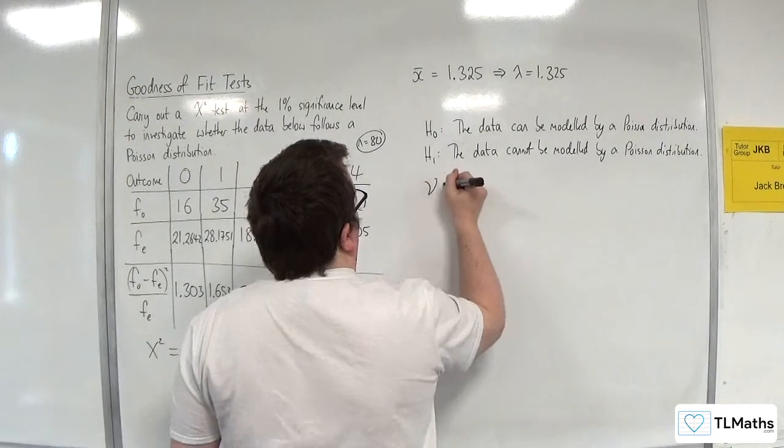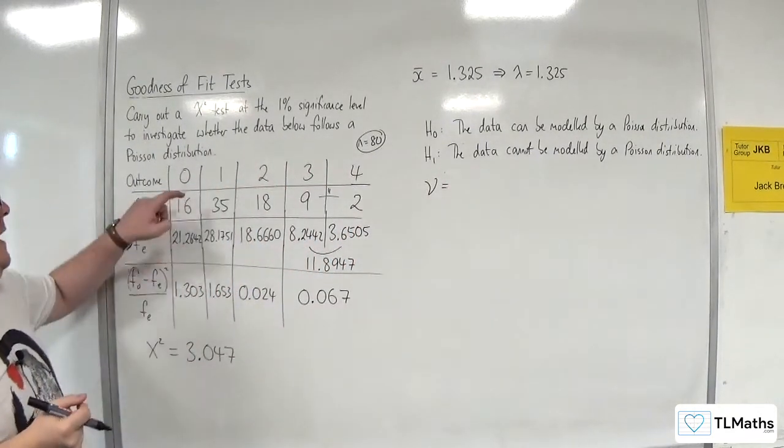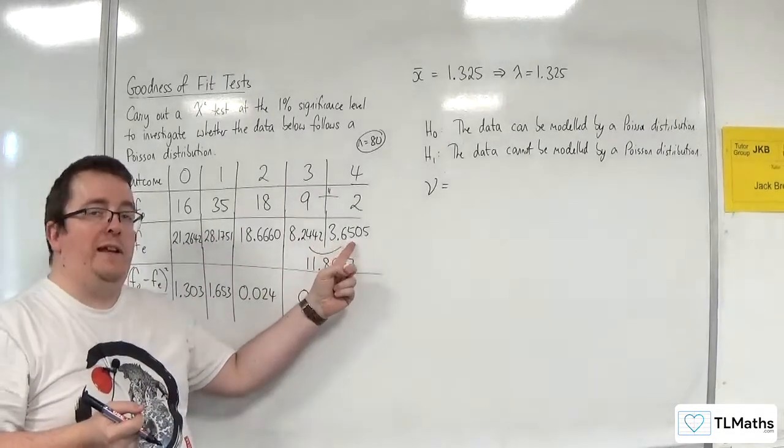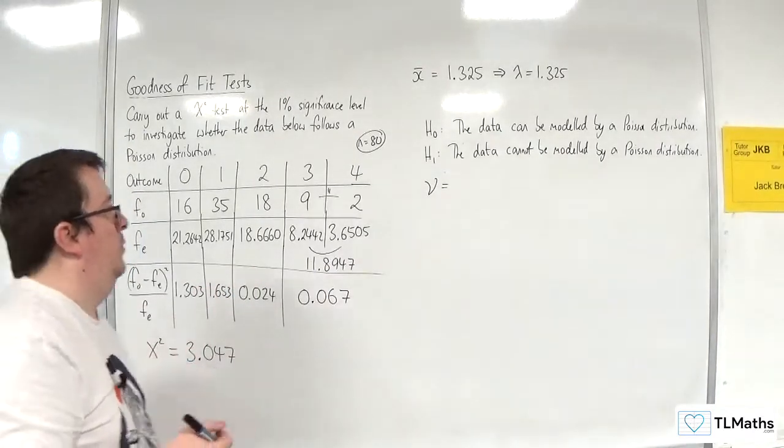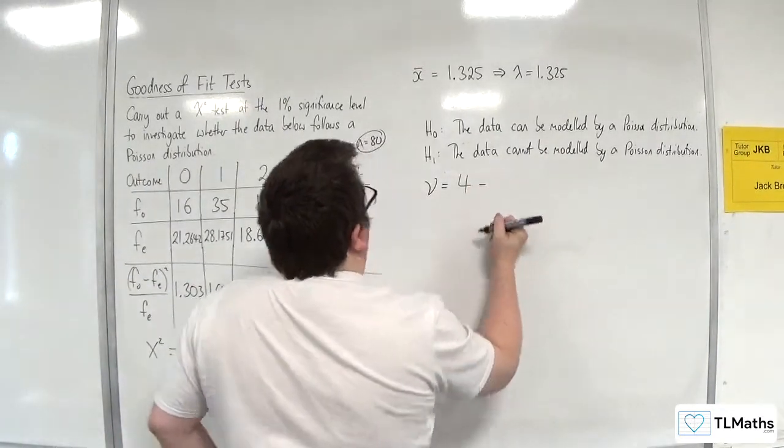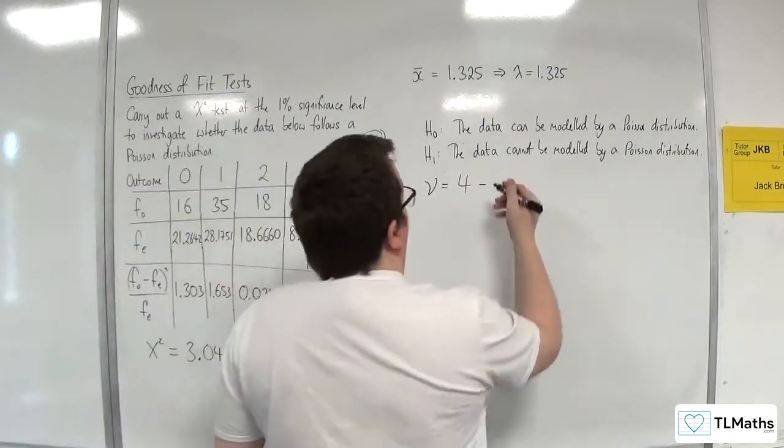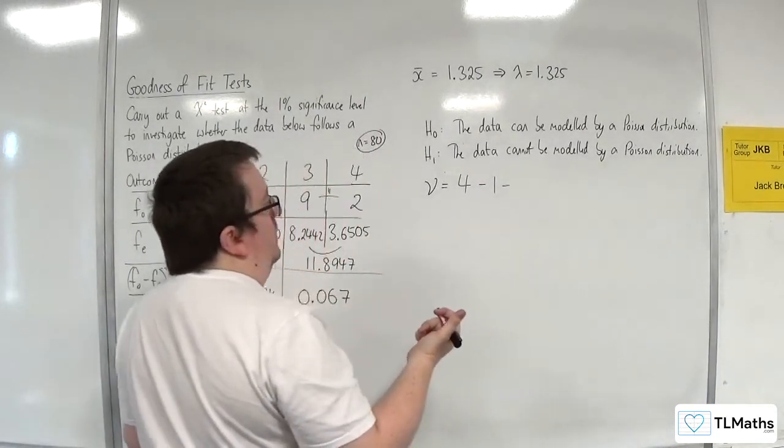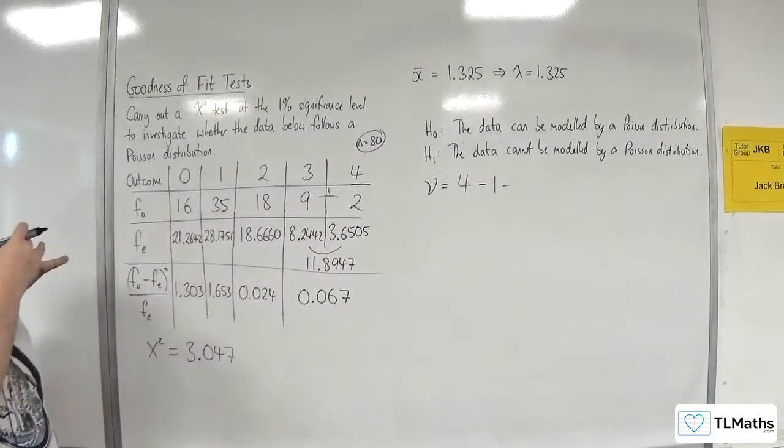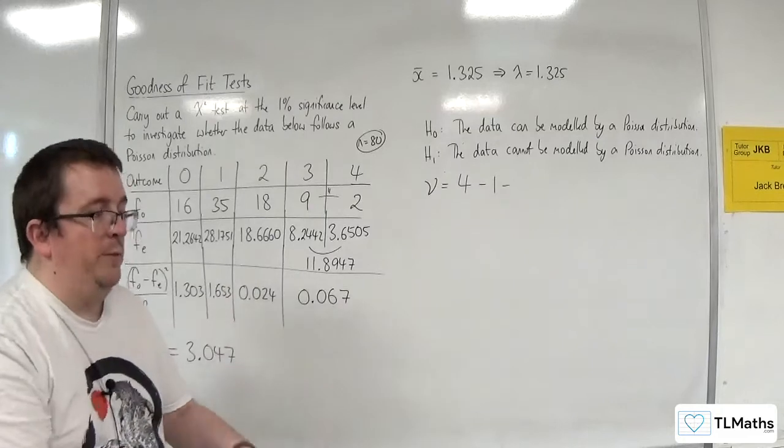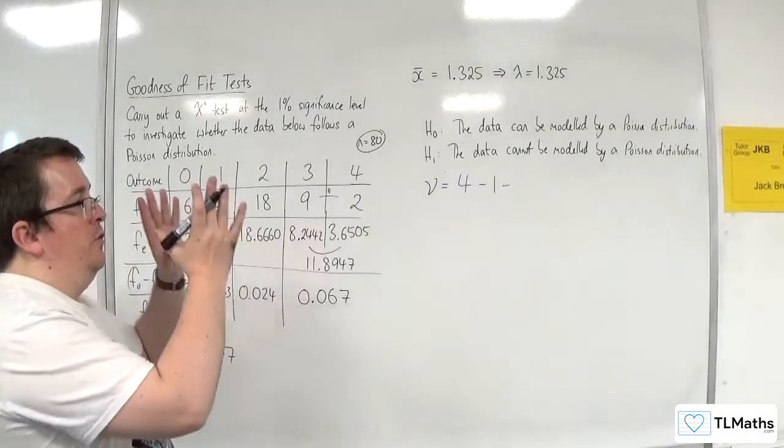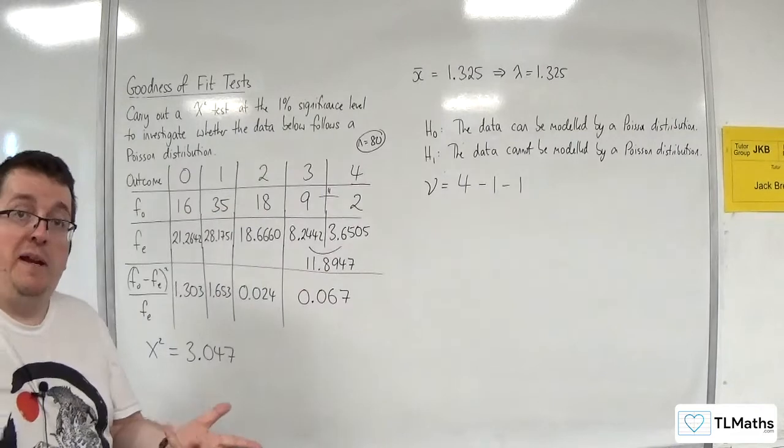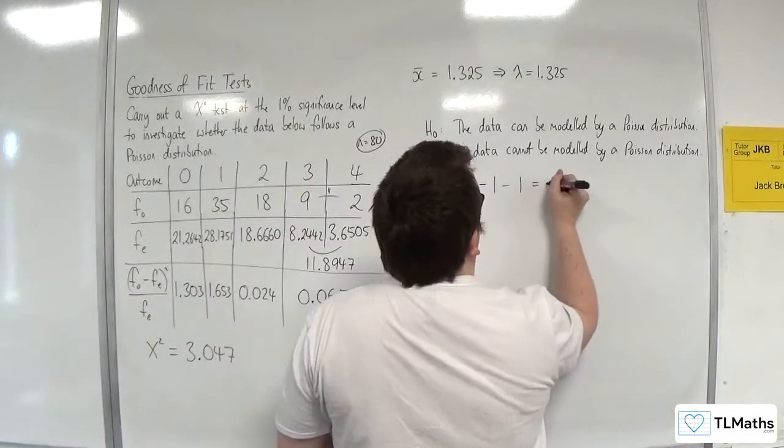So the degrees of freedom. We had originally five columns, but because we had the expected frequency less than five, we had to reduce that down to four. So we then had four columns. We've got to take away one for the estimated parameter lambda, and we've got to take away one anyway, from the fact that you've got four columns. You've always got to take away one, but we've got to take away an extra one because of the estimated parameter. So actually we're just down to two.